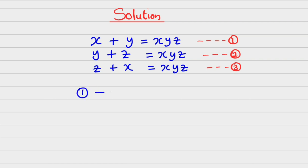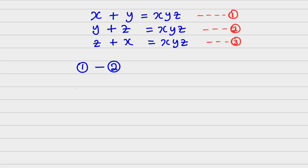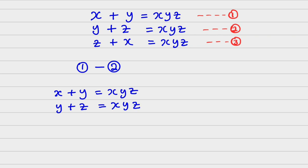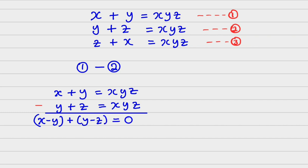So, this is equation 1. We are subtracting 2 from 1. We are going to have x plus y is equal to xyz. Then, we have y plus z is equal to xyz. Now, if we subtract, we are going to have x minus y, then plus y minus z, which is going to be equal to 0.